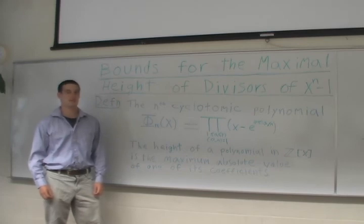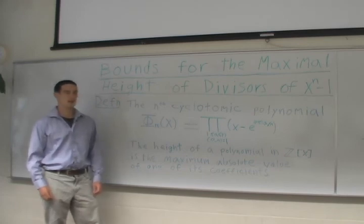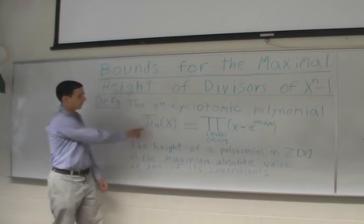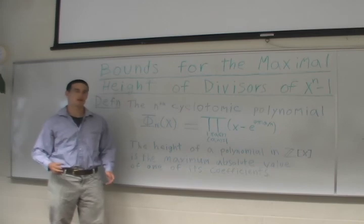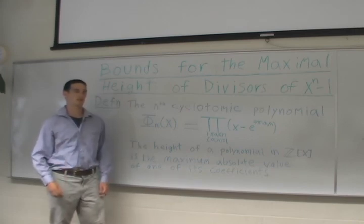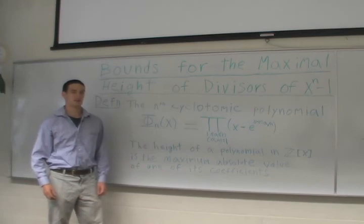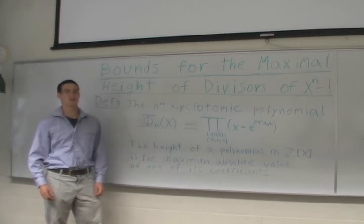I'll start with some definitions. The first definition that we need is that of the n-th cyclotomic polynomial. The n-th cyclotomic polynomial, phi n of x, is the unique monic polynomial whose roots are precisely the primitive n-th roots of unity. It is not difficult to show that these polynomials have integer coefficients and are irreducible.